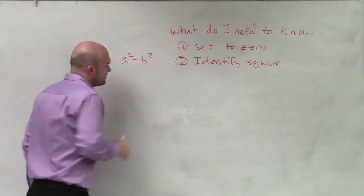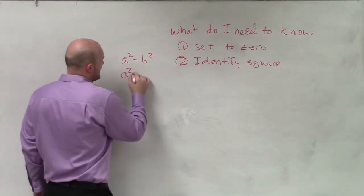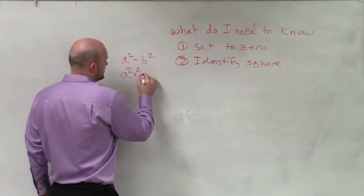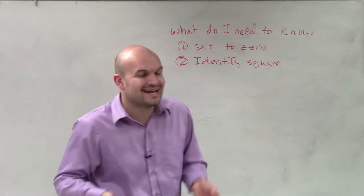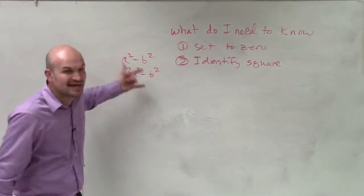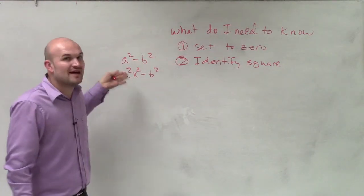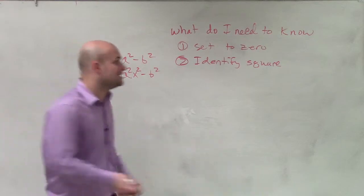a squared minus b squared. And that doesn't even matter if it's x squared minus b squared. So we want to make sure we can identify what are these square terms. Obviously, x is going to be x times x, but what are the values for a?